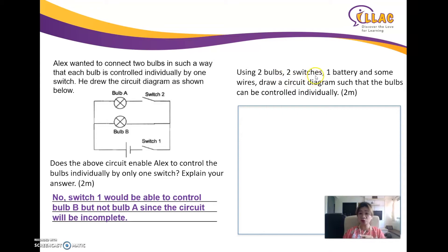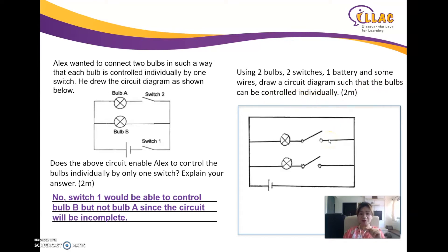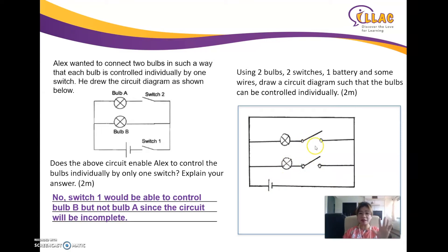Using two bulbs, two switches, one battery and some wires, draw a circuit diagram such that the bulbs can be controlled individually. The solution is to place each light bulb beside its own switch, arrange them in parallel so each does not affect the other, and put the battery in another parallel branch. With three things in parallel, you can control them separately.